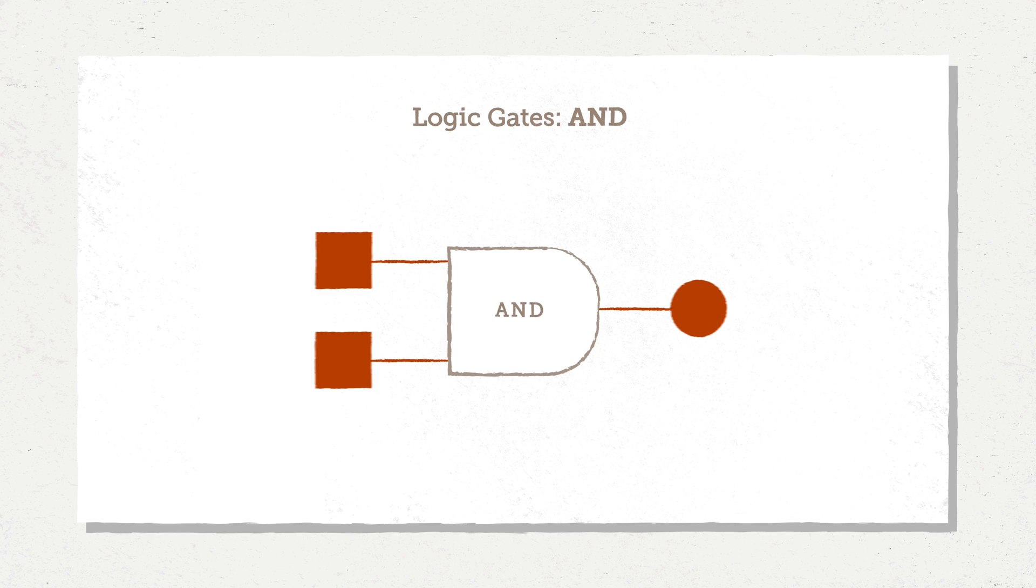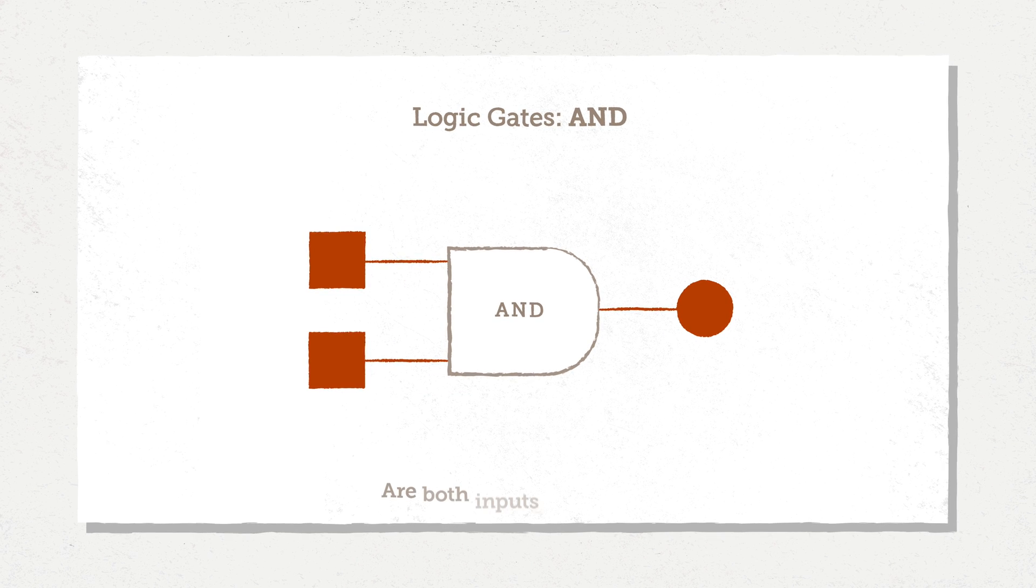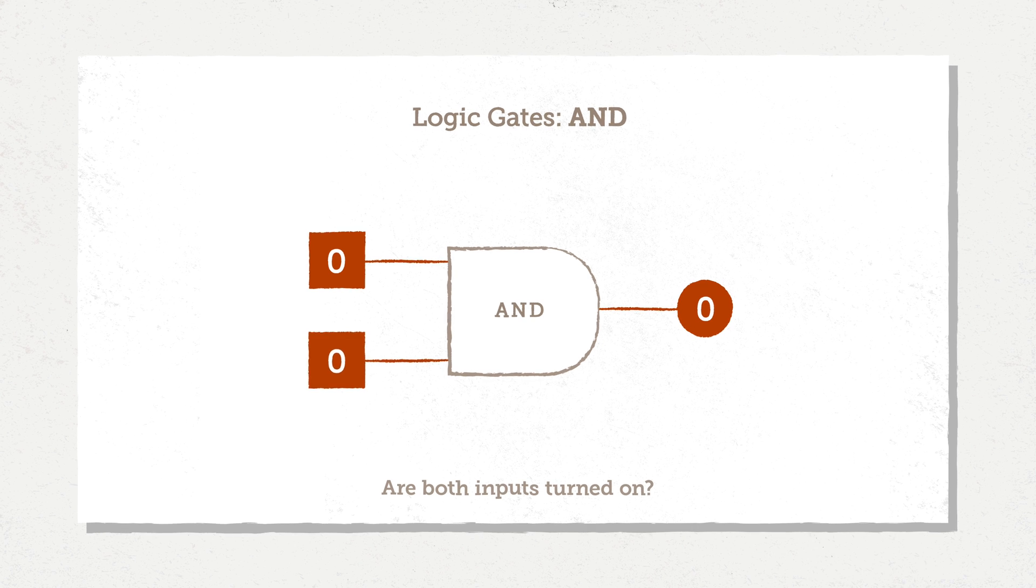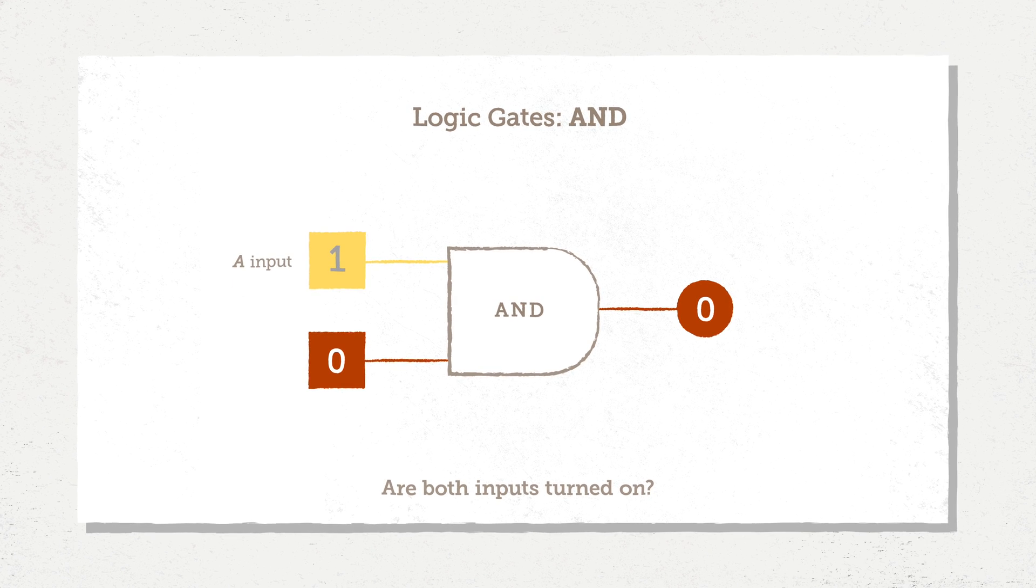We build digital logic using transistors—small electric switches. We can use these switches to create logic gates. We can answer true-false questions. For example, this is an AND gate. An AND gate can tell us when both of its inputs are true. Here we see 0 and 0—that is false and false. The result is false. If it's 0 and 1, still false. 1 and 0, still false. Because it's AND, we need the A input and the B input to be true. When they're both turned on, the output is 1.